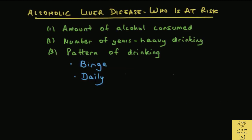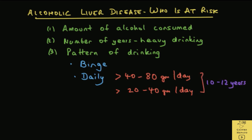Another pattern of drinking is daily heavy drinking. A general predictor of more severe cases of disease is an intake of 40 to 80 grams of alcohol per day by males and 20 to 40 grams of alcohol by females for 10 to 12 years. It appears that both binge drinking and daily drinking are equally bad for the liver.